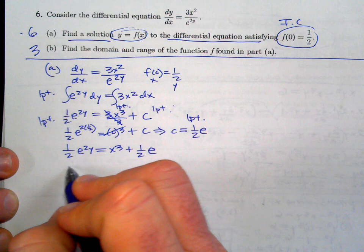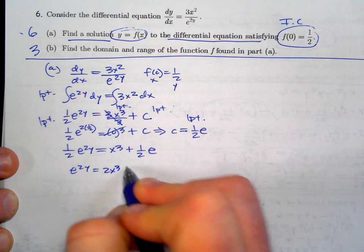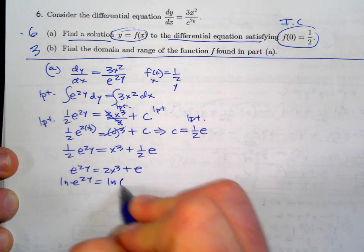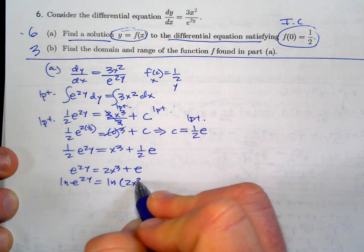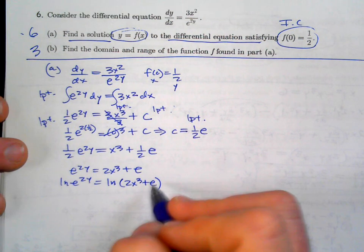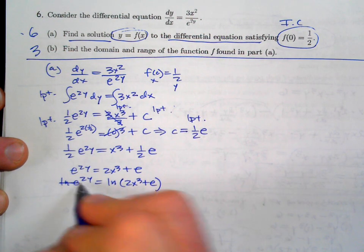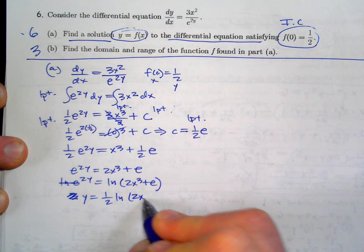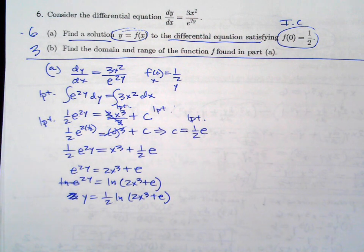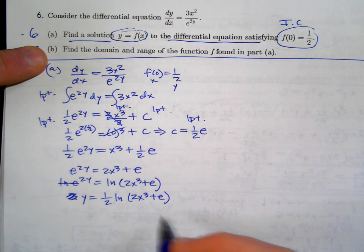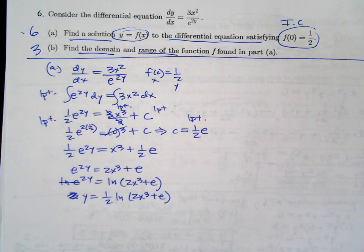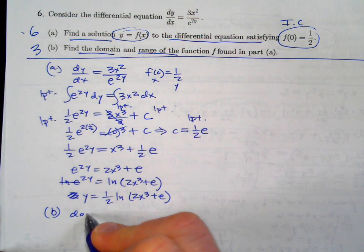Multiply both sides by 2, then take the natural log of both sides: ln(e^(2y)) = ln(2x³ + e). You cannot distribute the natural log — don't break it up. Divide both sides by 2: y = (1/2)ln(2x³ + e). Usually at this point you'd also state the domain, but here part b specifically asks for domain and range.